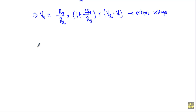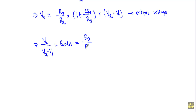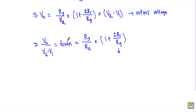Now I will calculate the gain of the instrumentation amplifier. The differential input voltage is V2 minus V1, and the output voltage is VO. Taking the ratio of output voltage to differential input voltage gives the gain: Gain equals R3 divided by R2, multiplied by (1 plus 2R1 divided by RG). Usually RG is a variable resistor — if we make RG smaller we get a very large gain, and if we increase RG we get a smaller gain. That's it, thank you.